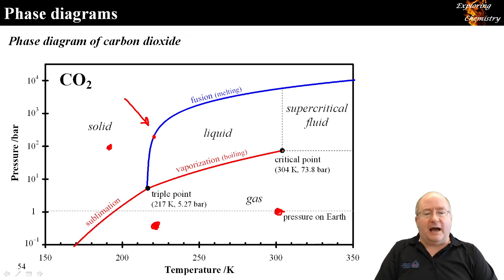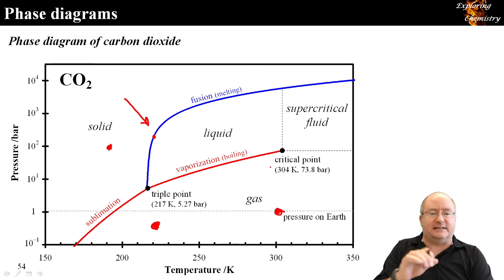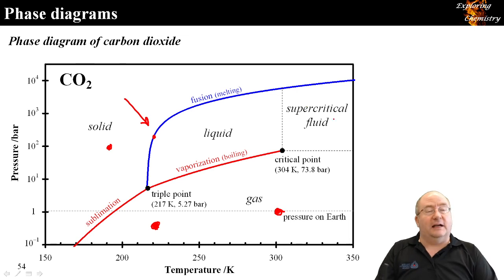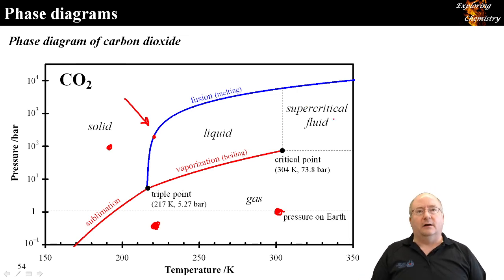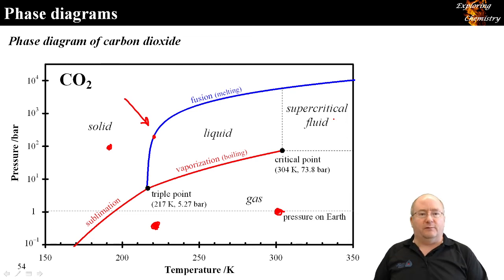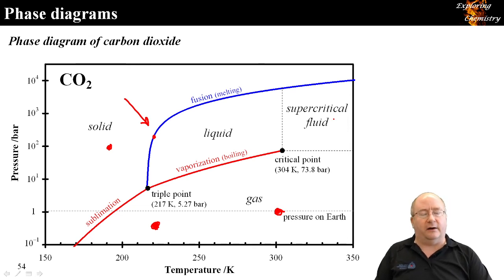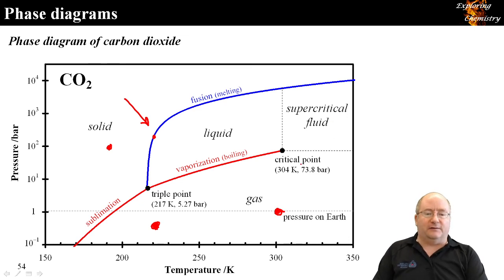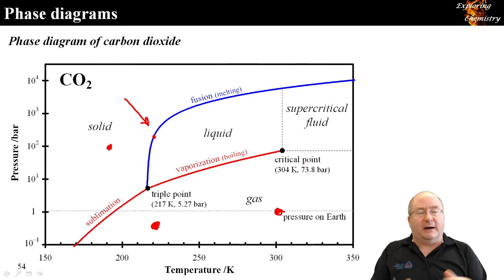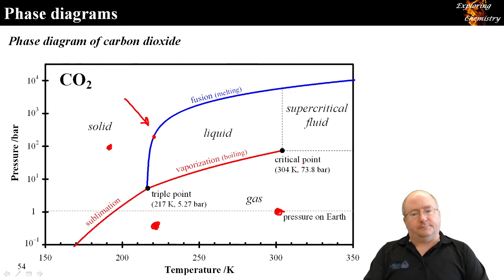The critical point at 304 K and ~74 bar is the maximum temperature and pressure at which liquid and gas can exist as separate entities. Above this is the supercritical fluid state — another state of matter, alongside plasma from physics. It has some properties of liquids and some of gases, but is a unique distinct state.